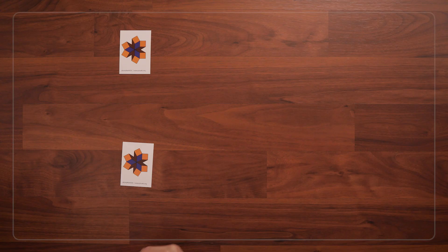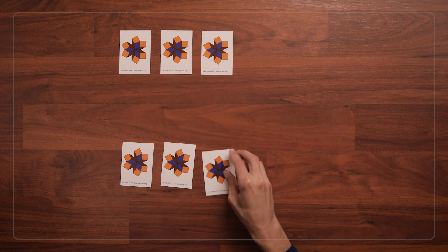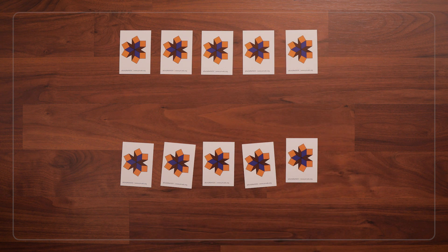To play Go Fish, first shuffle the cards and deal 5 cards to each player. Put the rest of the cards in a pile in the middle.